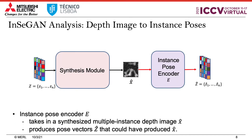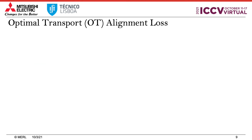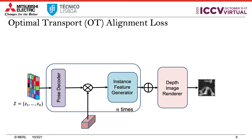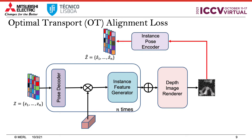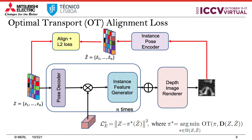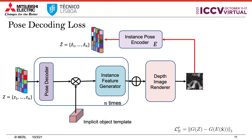The analysis module in INSEGAN takes as input a multiple-instance depth image generated by the synthesis module and produces encoded pose vectors that can reproduce the depth image. There can be an arbitrary permutation of the encoded poses, so to ensure the encoded poses Z-hat match the input random vector Z, we use an optimal transport-based alignment between the two sets.